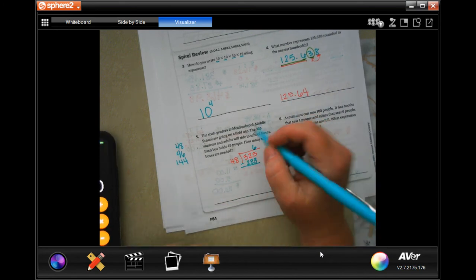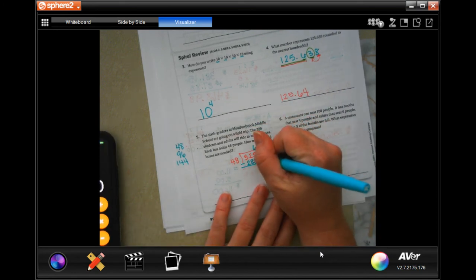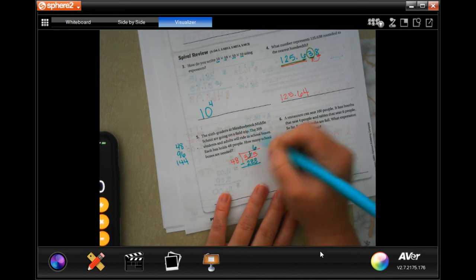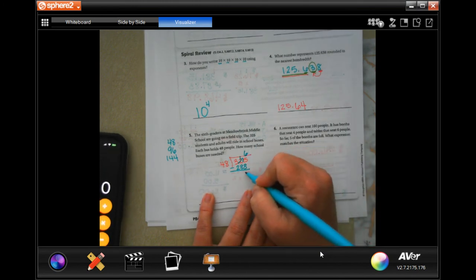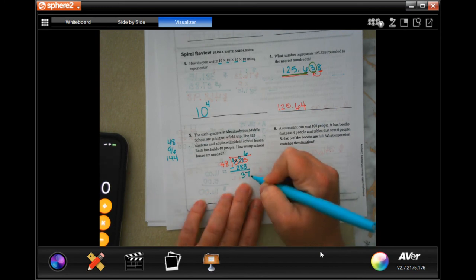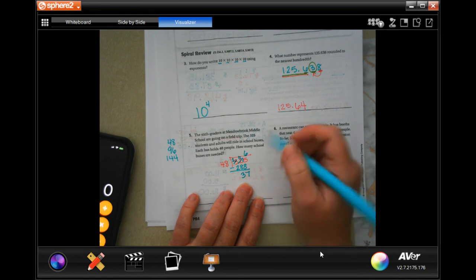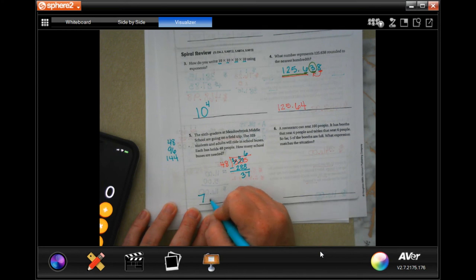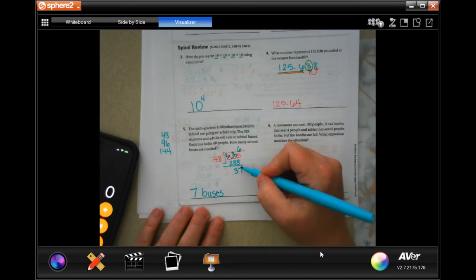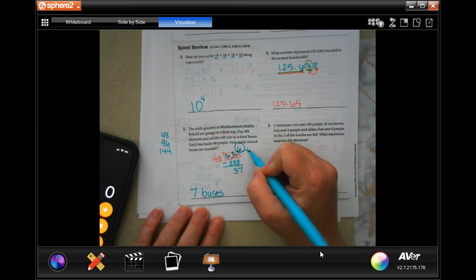Now when I subtract, 5 can't take away 8, so I have to borrow 1, making that 15. 15 take away 8 is 7. 1 can't take away 8, I'm going to borrow that, make it 11. So now I have 37 left over. I can't make those 37 people walk, so I'm gonna have to make that seven buses because you have your six buses plus we can't leave these guys hanging.